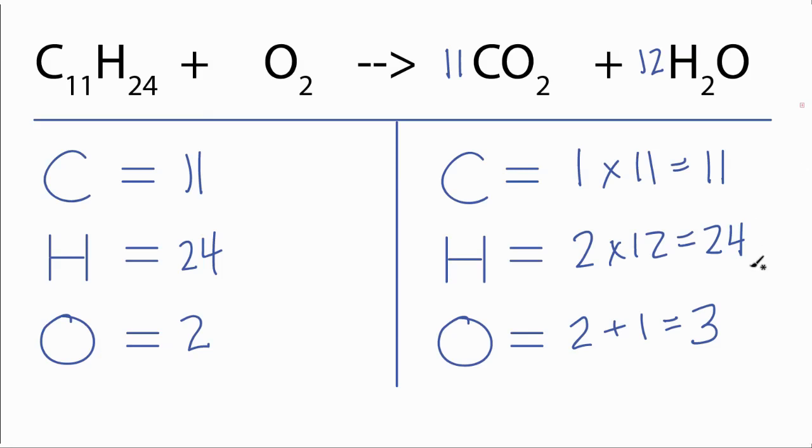For the oxygens, let's recalculate how many we have on the product side. I have 11 times 2, 22, plus the 12 times the 1, 12, for a total of 34 oxygens on the product side.